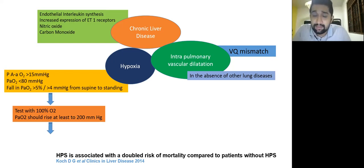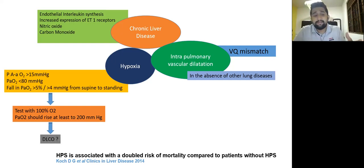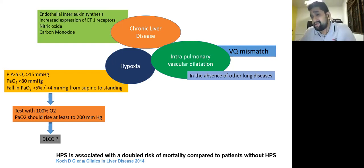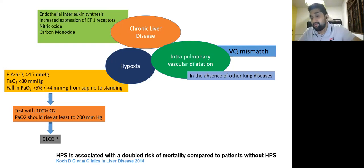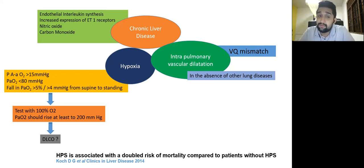If a child has hepatopulmonary syndrome, this rise in PaO2 to 200 with 100% oxygen will not happen. Additionally, lung diffusion capacity for carbon monoxide — if less than 56% — indicates a higher chance of hepatopulmonary syndrome. Though more sophisticated, this test is more sensitive than arterial blood gas and can detect cases missed by ABG, affecting reported prevalence. It can also predict the severity of the underlying liver disease.